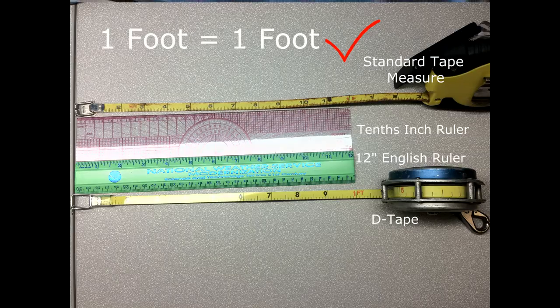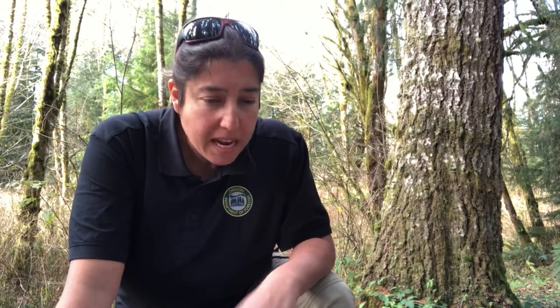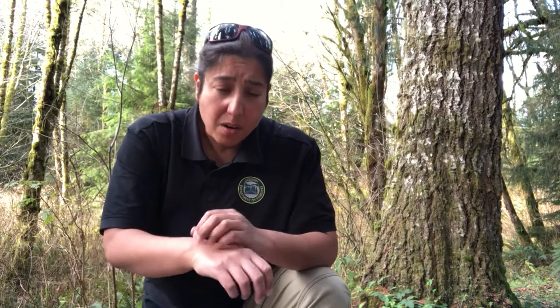If you read any fuels inventory manuals — whether it's Firemon or FFI — any of those protocols will tell you to do random transects. There are lots of ways: use a compass, use a watch, throw something behind you, roll some dice — whatever you want. If you're going to do a lot of transects, random is absolutely the way to go. But for the simple transect I'm showing you today, you want three, and you want them to be representative of the unit you're looking at.